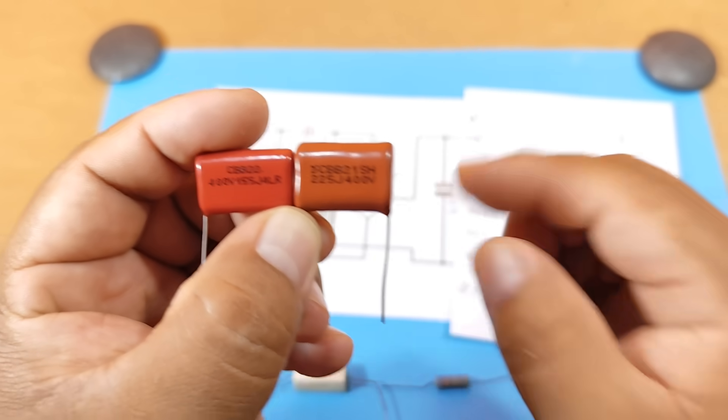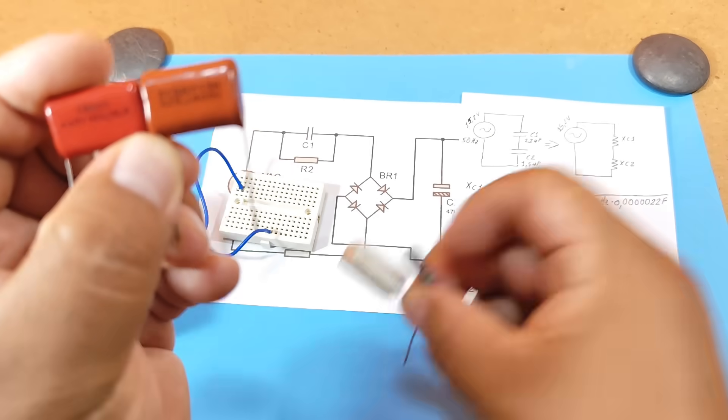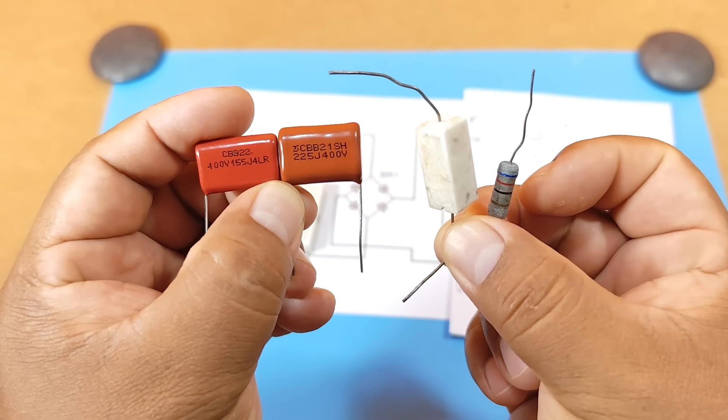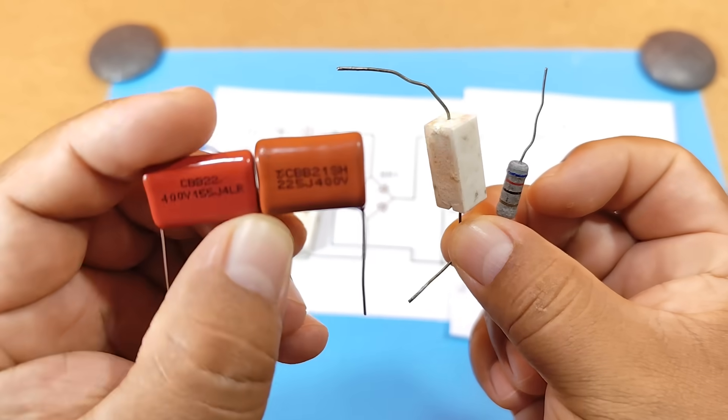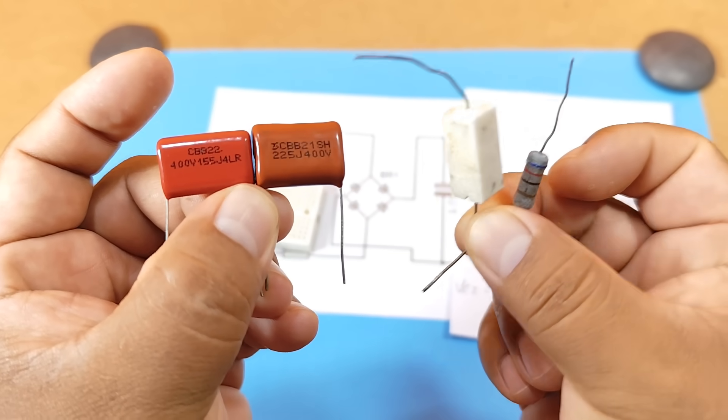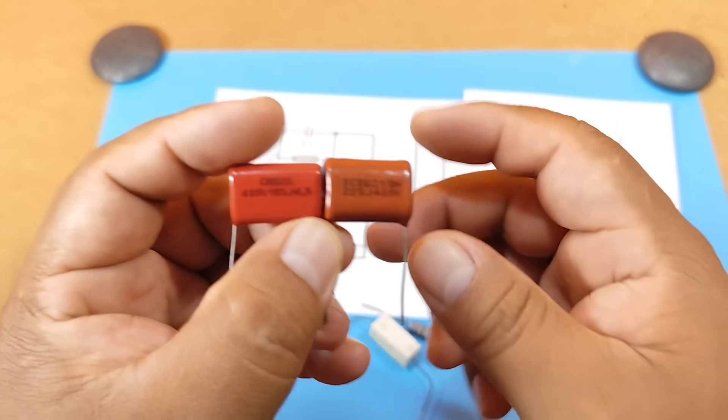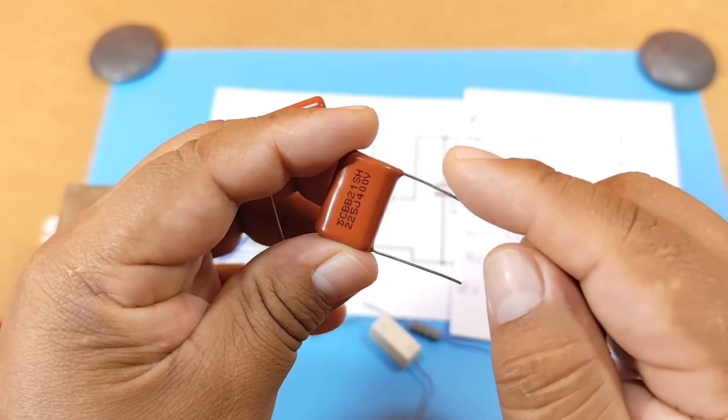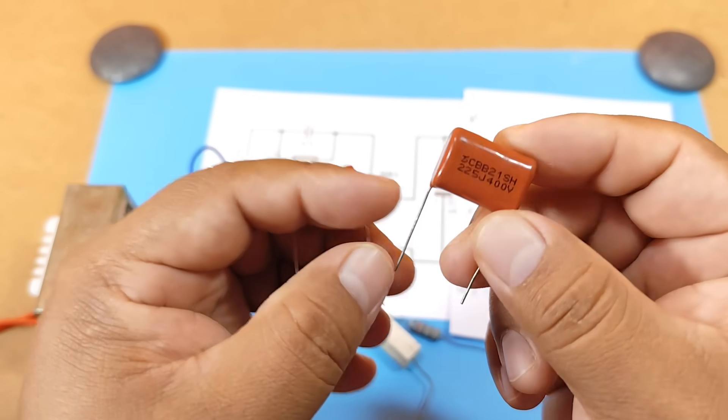In other words, a capacitor can act as a resistor when alternating current is applied to it. But with the advantage that these capacitors won't heat up like resistors. Since current can't pass through capacitors from one end to the other, the capacitors will never heat up.